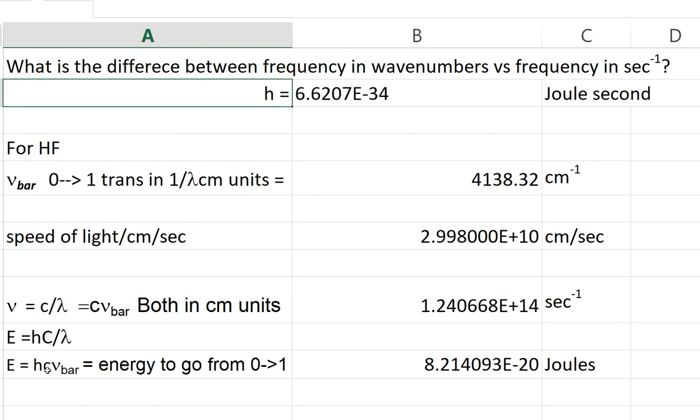Where c again is in centimeters per second, speed of light, and nu bar is one over lambda in centimeters. So c times nu bar would be nu. All right, so h nu, and that's the energy to go from zero to one.